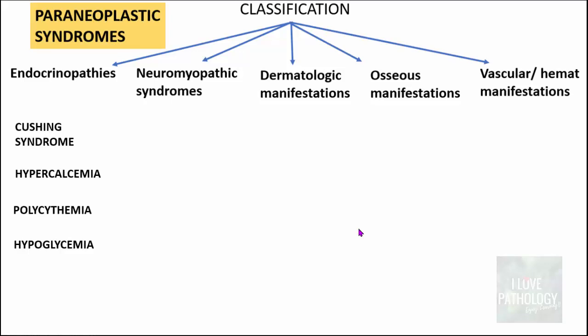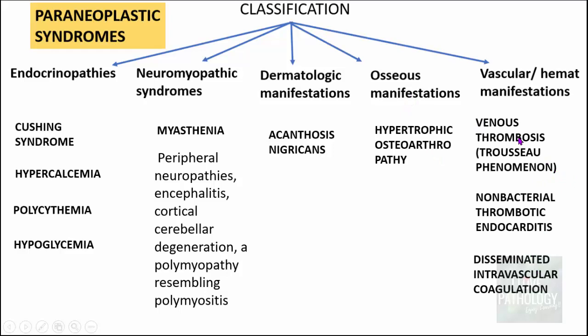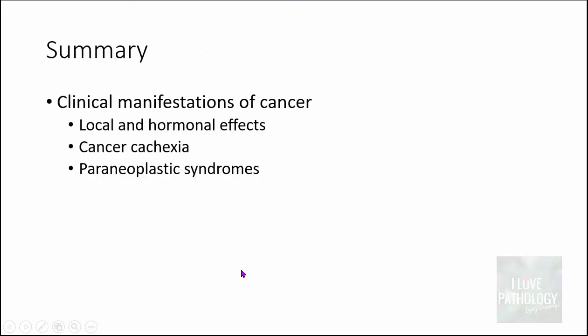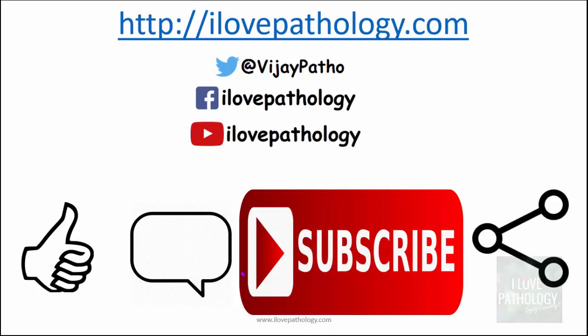To summarize the paraneoplastic syndromes: endocrinopathies include Cushing's syndrome, hypercalcemia, polycythemia, and hypoglycemia; neuromyopathic syndromes include myasthenia and peripheral neuropathies and polymyositis; dermatologic manifestations include acanthosis nigricans; osseous manifestations include hypertrophic osteoarthropathy; and vascular and hematologic manifestations include migratory thrombophlebitis, non-bacterial thrombotic endocarditis, and DIC. Today's topic also covered local and hormonal effects of cancers on patients and cancer cachexia. Thank you for watching — please like, comment, subscribe, and share.